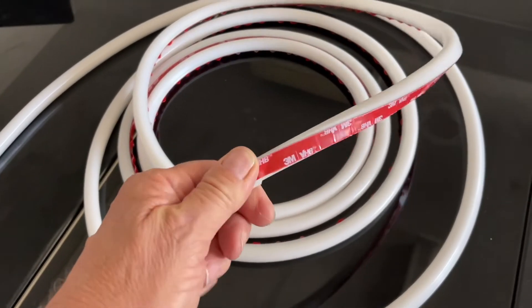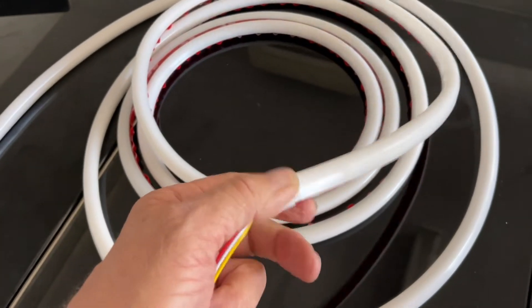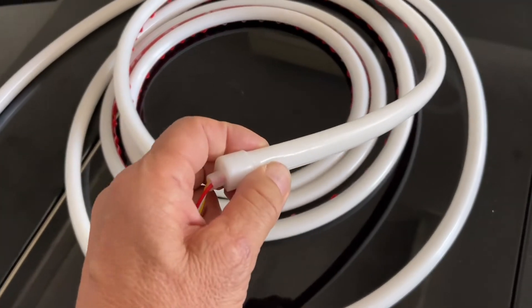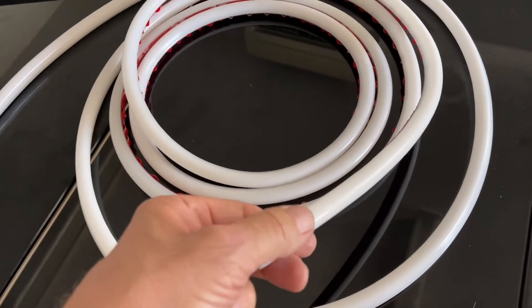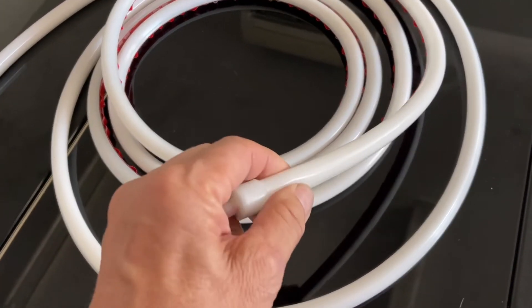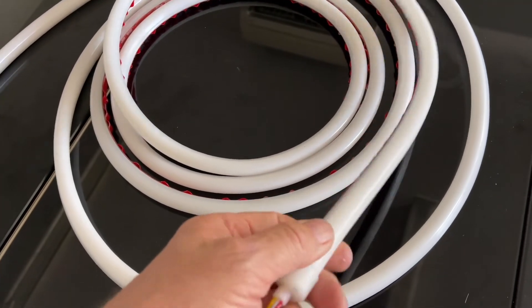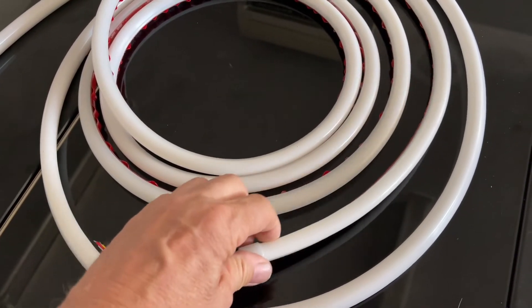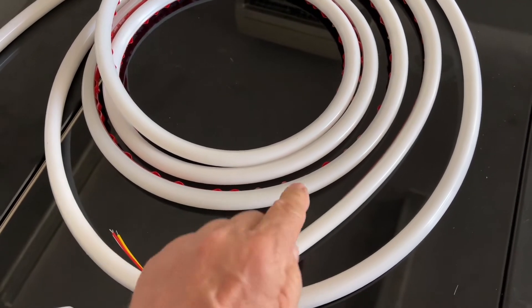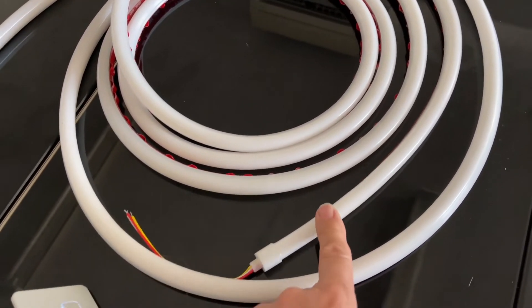You see we've got the 3M VHB on the back. That's IP67. It can actually be installed externally and can be up under a cupboard. So for our caravan OEMs out there, you're going to love this product. And it's switched on the positive and it's dual LED. It's our own design, our own mold, and we've got our own caps on the end there.